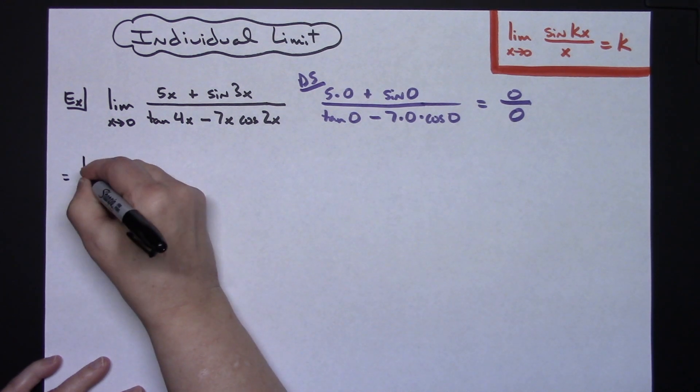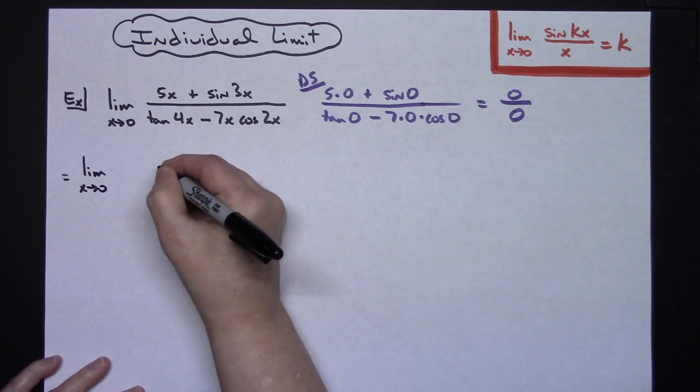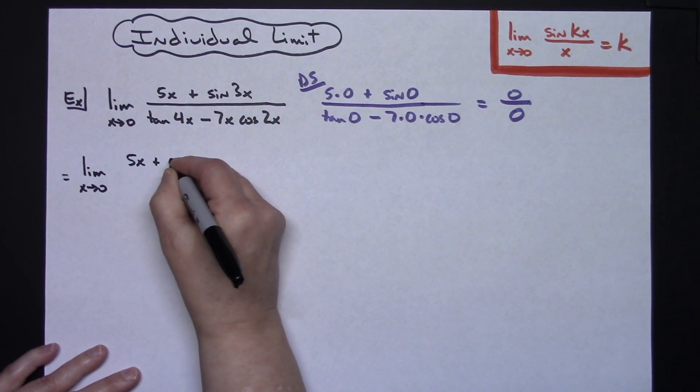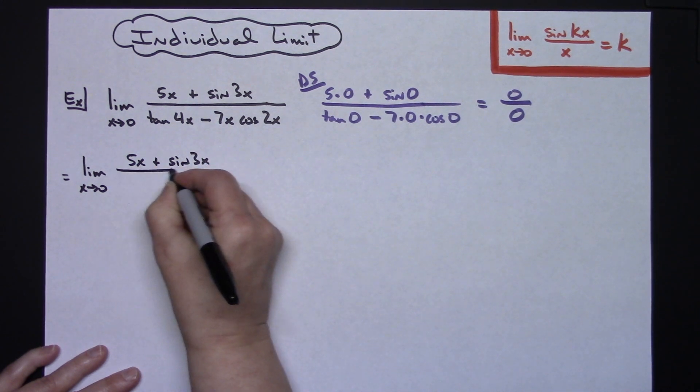So I'm going to have the limit as x approaches 0. The top is not going to change so I'll have my 5x plus sine of 3x.